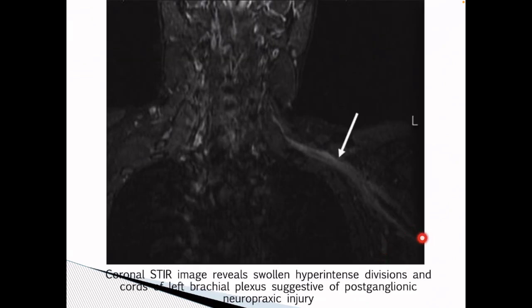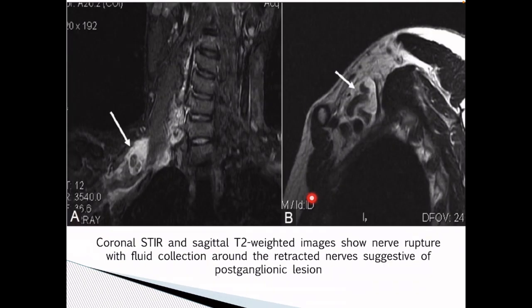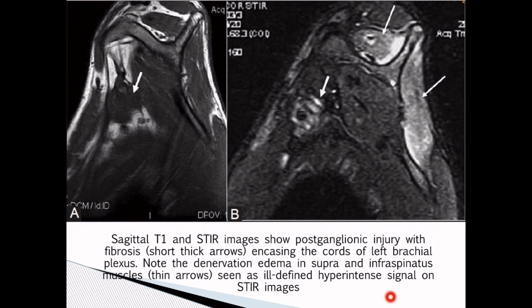This coronal STIR image reveals swollen hyperintense divisions and cords of the left brachial plexus suggesting a postganglionic injury. Another coronal STIR and sagittal T2-weighted image shows nerve rupture with fluid collection around the retracted nerve, also suggestive of a postganglionic lesion. Sagittal T1 and STIR images showing postganglionic injury with fibrosis encasing the cords of left brachial plexus. There is also denervation edema in the supra- and infraspinatus muscles seen as ill-defined hyperintense signal on STIR images.